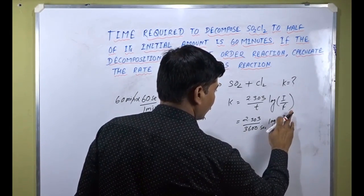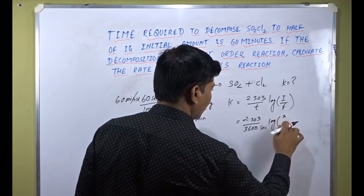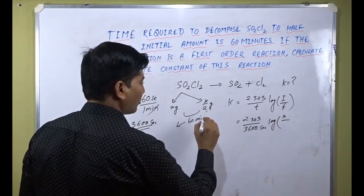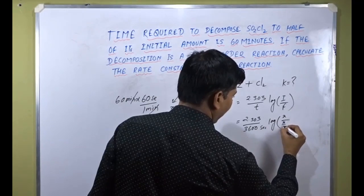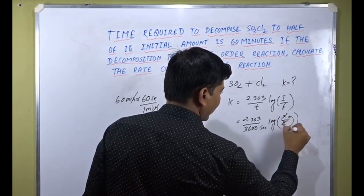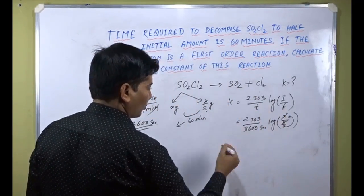We don't need to put units because units will cancel out. X divided by final amount X by 2. The 2 will go to the top. X cancels out. Here we get log 2.